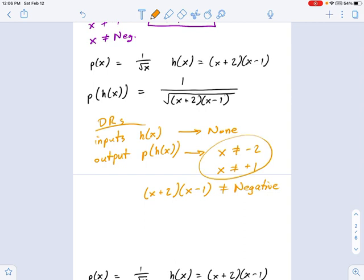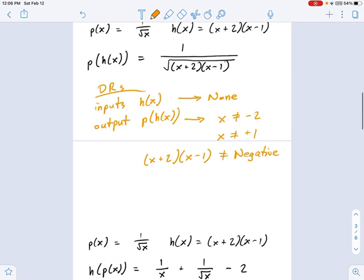Which is a little different than saying it can't be zero. Saying it can't be zero got us these things. Saying it can't be negative, that's a whole different problem. We gotta graph this one to figure it out. So, if you were to graph that polynomial, x plus two and x minus one, you should remember how to graph things.